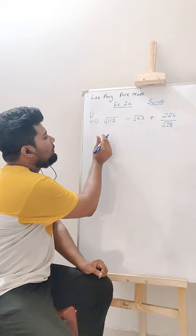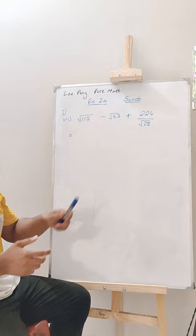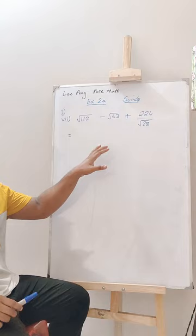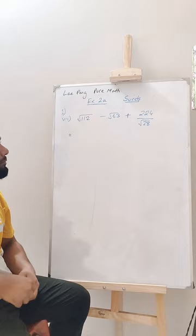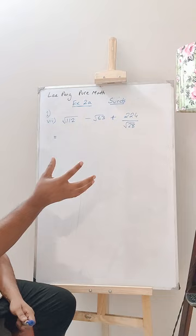So if you have seen our previous videos on surds, we have showed you how we can represent root over 112, root over 63, how we can represent these numbers as a multiple of root over 4, root over 9, root over 16, so that we can have a whole number. It will be easier for us to proceed with whole number answers, or part whole number, part root.